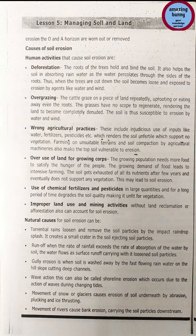Causes of soil erosion: there are two categories — human activities and natural causes. First human cause is deforestation. The roots of trees hold and bind the soil and help the soil absorb rain water as the water percolates through the sides of the roots. When the trees are cut down, the soil becomes loose and exposed to erosion by agents like water and wind.